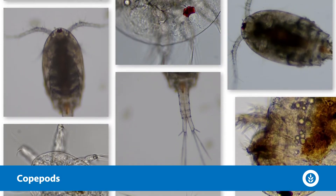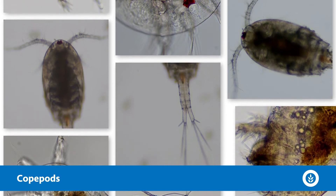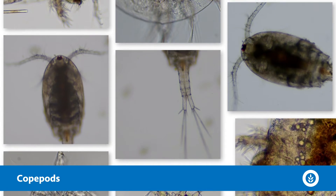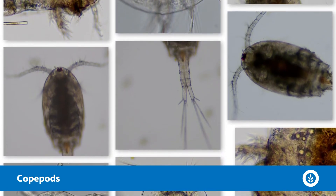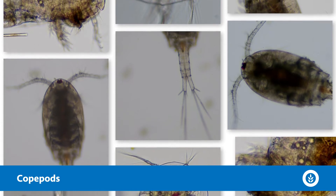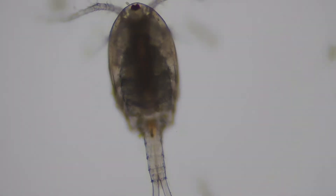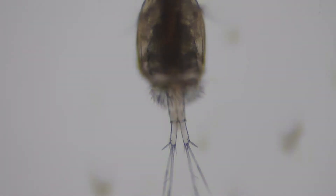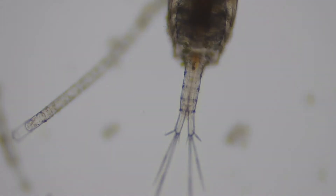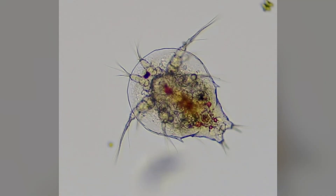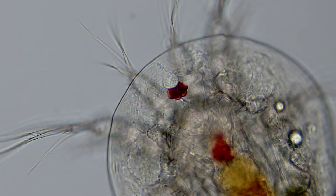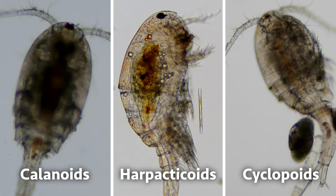Next up is one more group of crustaceans: the copepods. Over 20,000 species have been described, very small at about one to two millimeters in length. A lot of them have big antennae and filter-feed on algae, plankton, and bacteria. They grow in almost every habitat throughout the world. They start as a little stage called the nauplius and molt many times — five or six times — into different-looking adults. The three main types are the calanoids, harpacticoids, and cyclopoids.